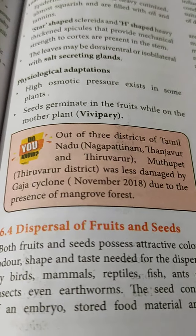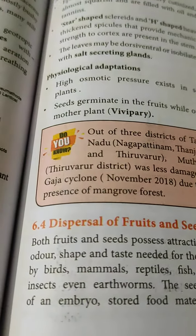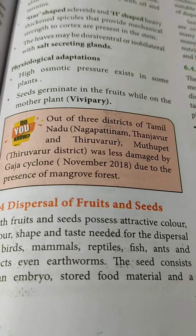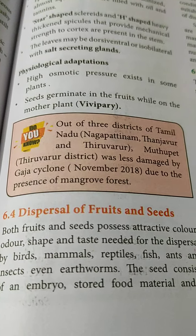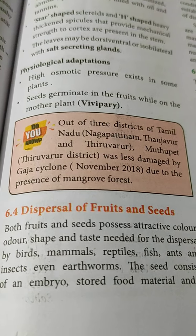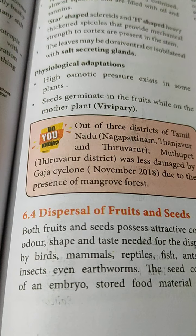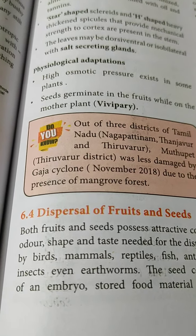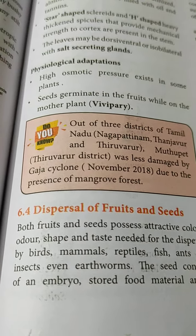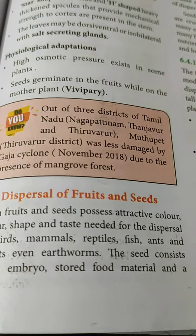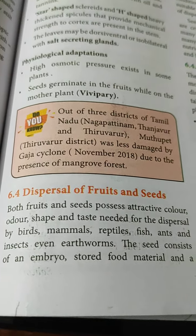We already have some idea about this topic from 10th standard — that fruits and seeds possess attractive color, odor, shape, and taste needed for dispersal by different types of agents, mainly animals. In addition, some abiotic factors are also responsible for the dispersal of fruits and seeds.